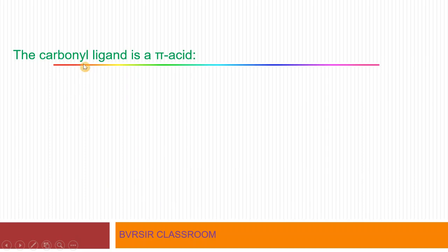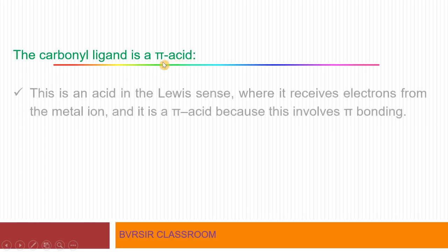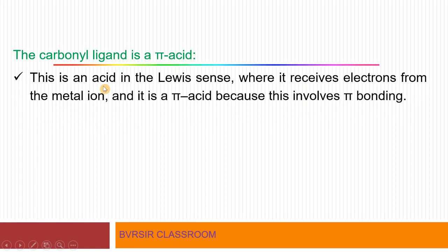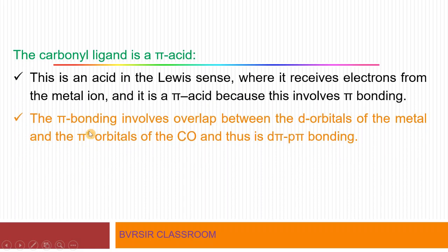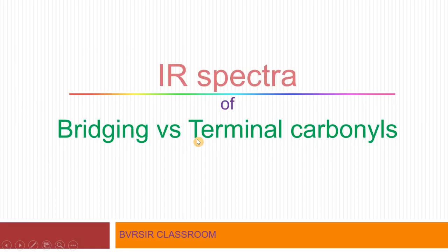That is why these molecules are very stable. The carbonyl ligand is a pi acid — it accepts electron pairs into its pi orbital, forming pi bond interactions with the metal. The carbonyl ligand acts as a pi acid. In the Lewis sense, it receives electrons from the metal ion. The pi bonding involves overlap between the d orbitals of the metal and the pi star orbitals of CO, making it a d-pi to p-pi type of bonding.